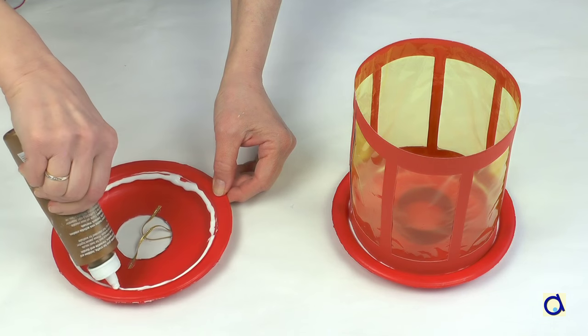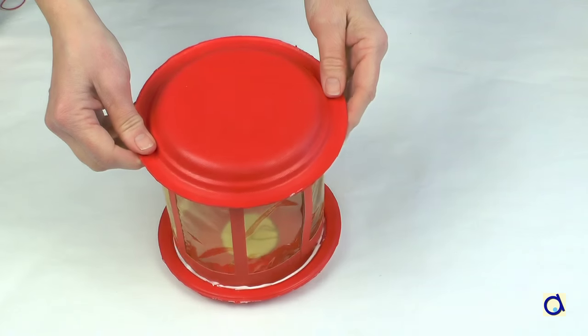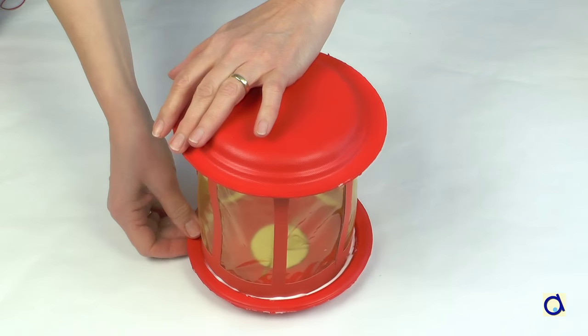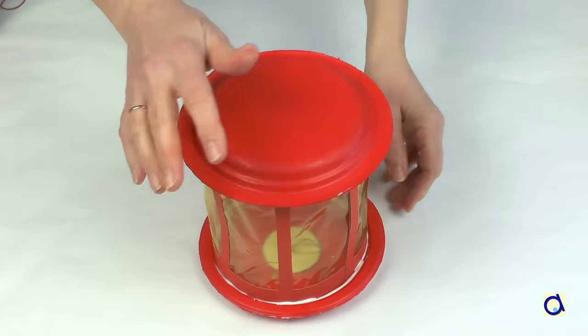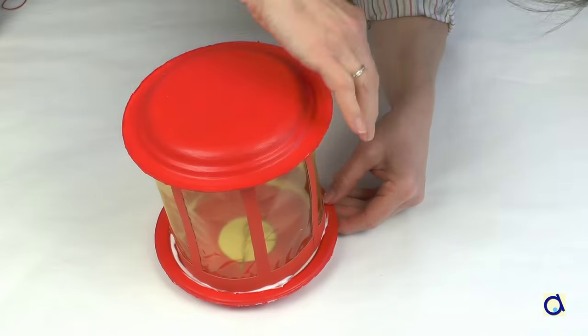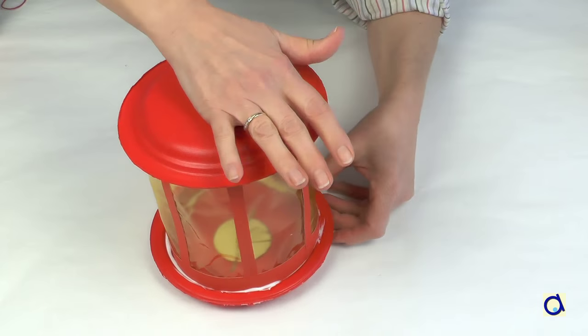When the glue is dry, put white glue in the rim of the plate with the hole and glue the other side of the lantern. Put the plate with the hole underneath so that the white glue does not drip on the lantern.